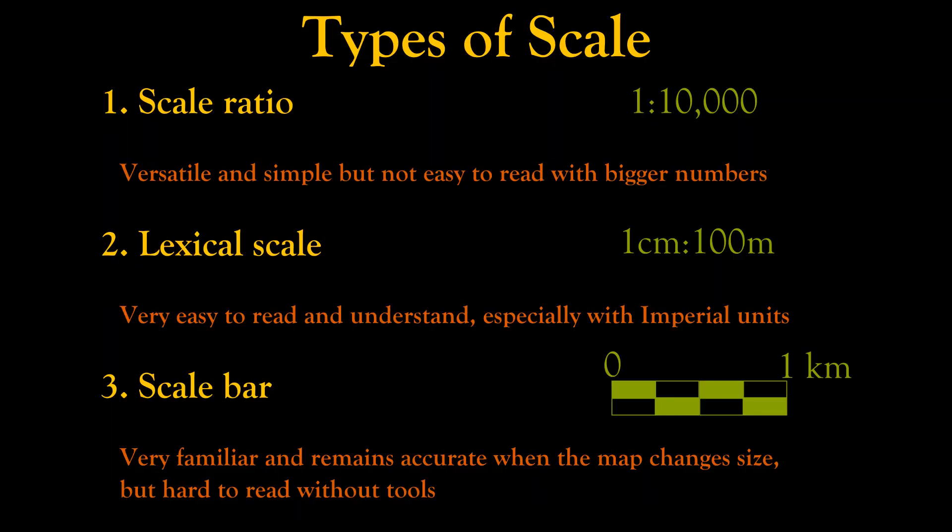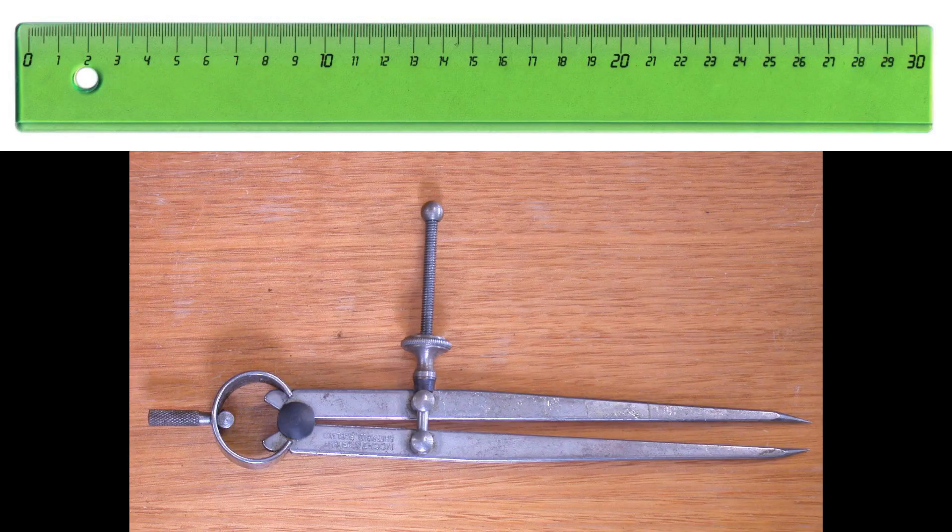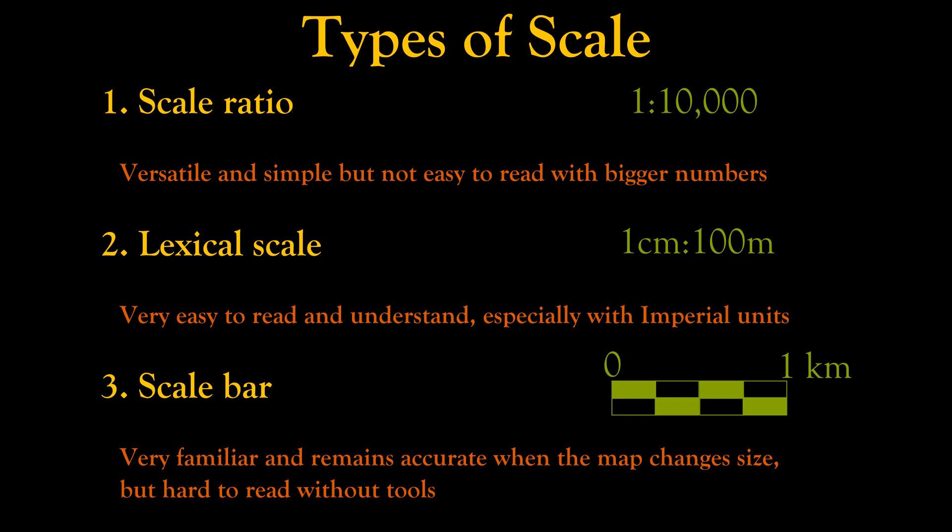The problem with a scale bar is that it's not actually as easy to use as a ratio or a lexical scale. In order to use a scale bar properly, you need a tool, like a ruler or a pair of dividers. If you draw a scale bar of 1 cm to 1 km, and then the map is scaled down to 87.5% of its original size for publication, a person using a marked ruler will have to measure out 8.75 mm for every km on the map. Lexical scales are usually more versatile, but scale bars are your best bet if you can't be certain of your map keeping a consistent size.